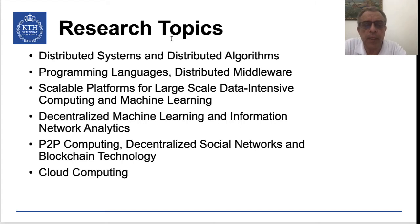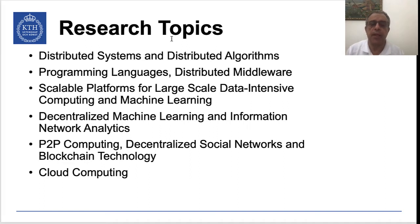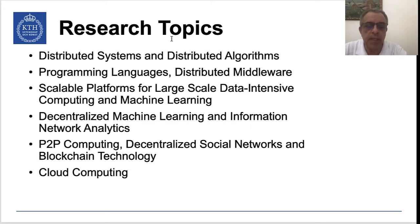The typical research topics in our group are distributed systems and distributed algorithms, programming languages and distributed middleware, scalable platforms for large-scale data-intensive computing and machine learning — looking at how you use distributed systems to scale machine learning training, for example. We also work on decentralized machine learning, information network analytics, and completely decentralized systems like peer-to-peer computing, decentralized social networks that do not depend on a coordinator, and blockchain technology.